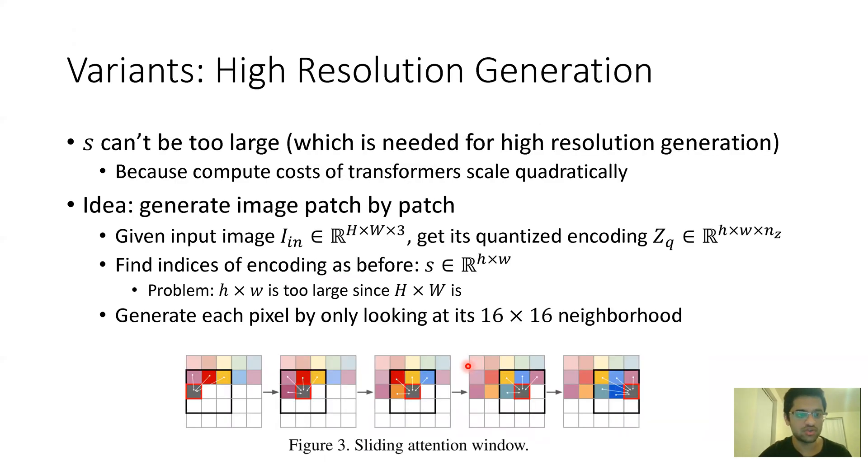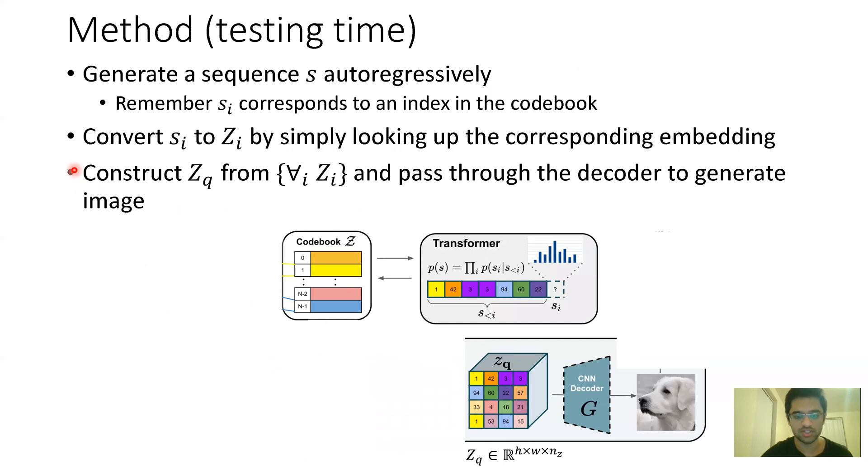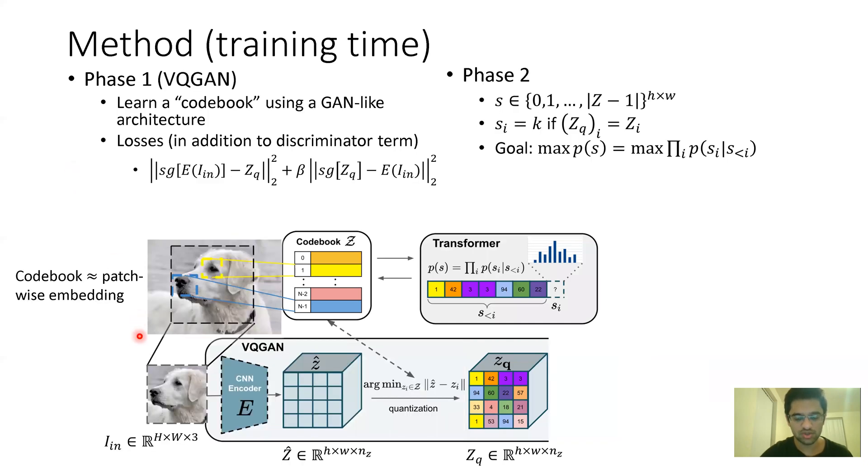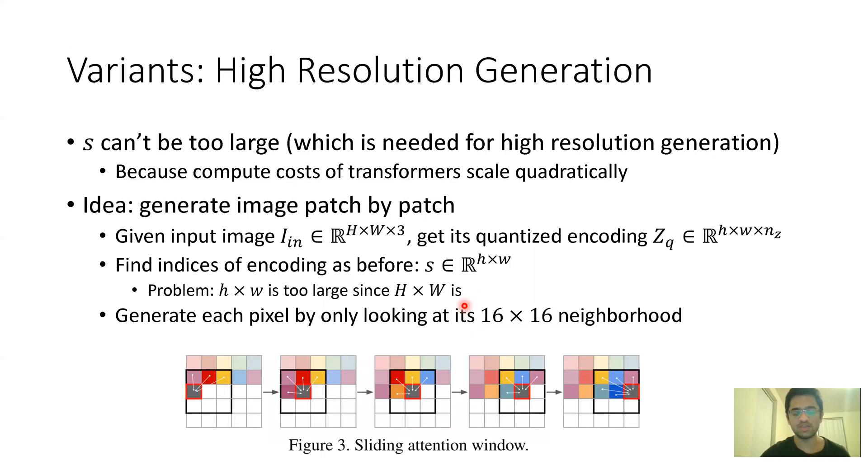This is one variant of the original model to help in conditional generation. Second is high-resolution image generation. How do you generate high-resolution images? You cannot use this method that we talked about because if the image is of high resolution, that means capital H and capital W are too high, which correspondingly mean small h and small w are too high. Which will mean that the sequence length is too large because the sequence length is just H times w. And if you have very long sequences and transformers, then the cost is quadratic. So you cannot do that practically.